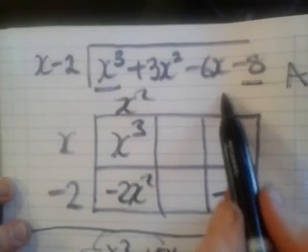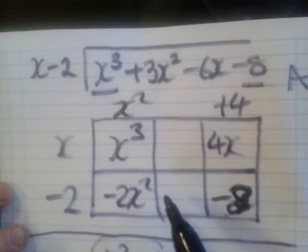Now we'll just divide the minus 2 into the minus 8 and we get plus 4 up here. Now we'll use the plus 4 to multiply by the x, get 4x there.